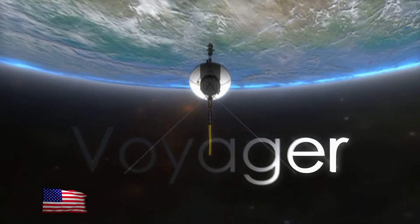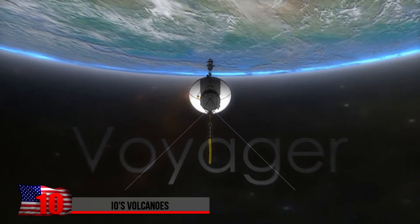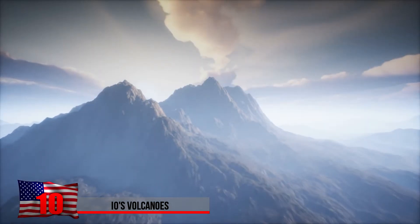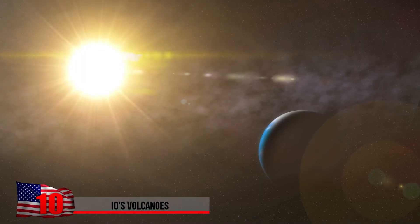Io's Volcanoes. In 1979, Voyager discovered that volcanoes can exist in some of the coldest reaches of space, far from the warm light of our sun.